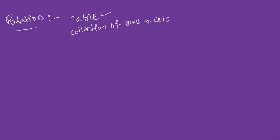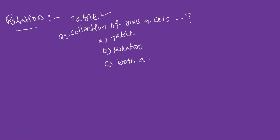What is relational? A collection of rows and columns is called as what? Option A is a table. Option B is a relation. Option C is both A and B. Option D is a question. Both table and relation are correct answers, so C — both A and B — is the right answer.